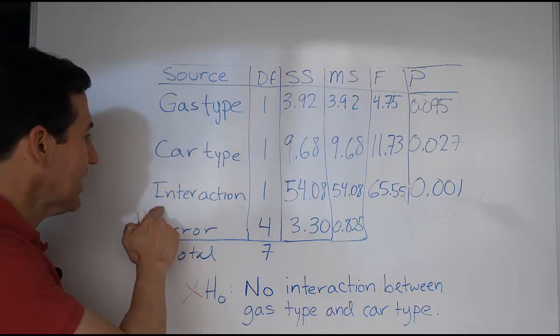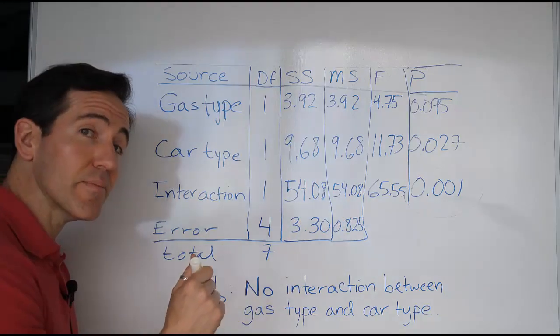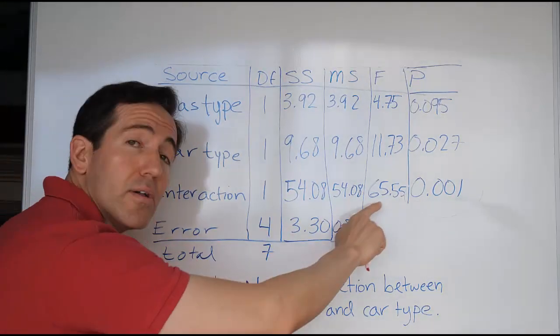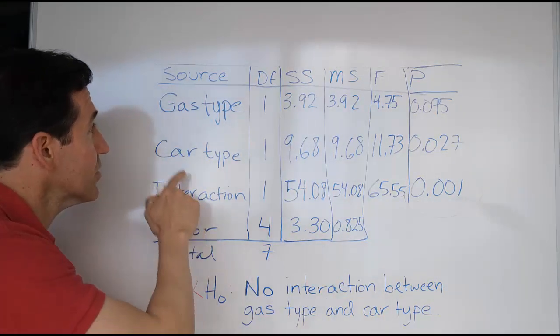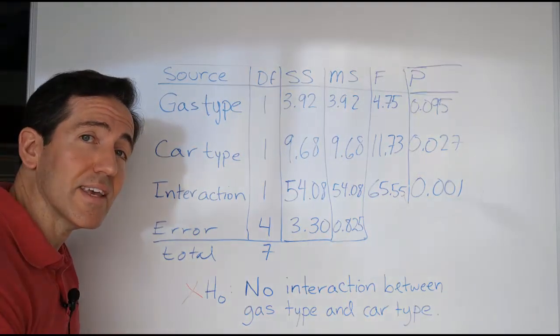The main idea here is if there's an interaction effect, and that simply means that the p-value is small, lower than alpha, then you should not test for main effects. That's the key idea to remember.